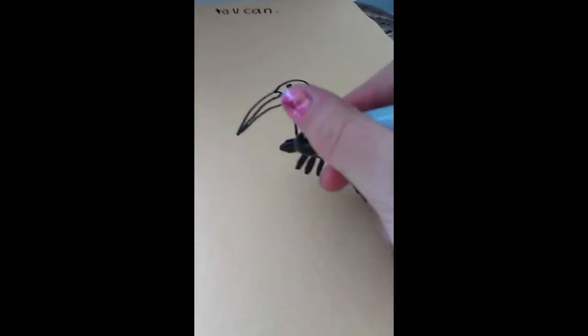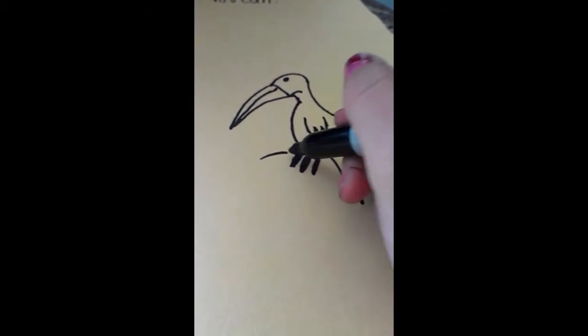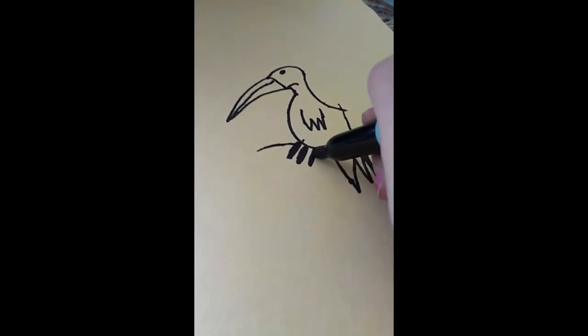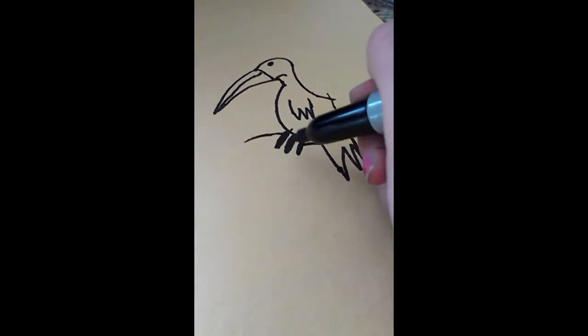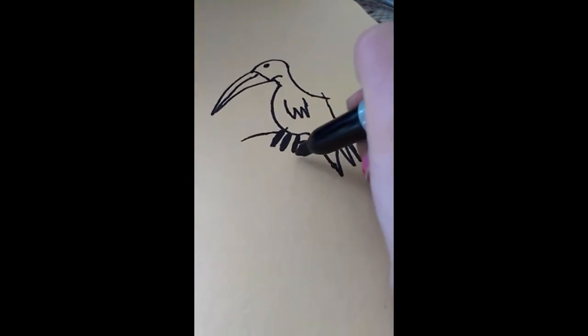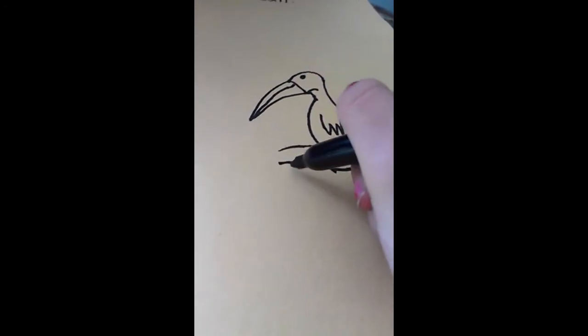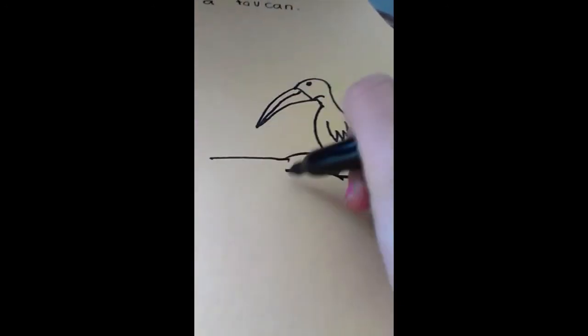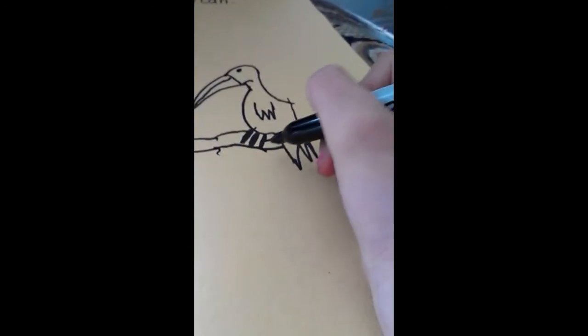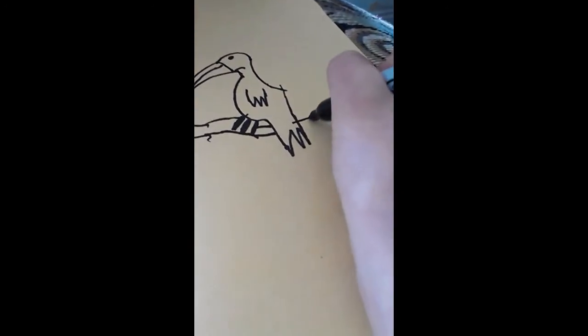And then I'm going to draw a branch. Like that. All the way to there. That's the branch. And that's him. There's the branch. The branch ends right there.